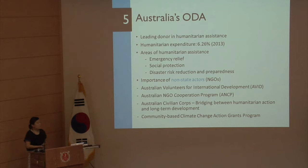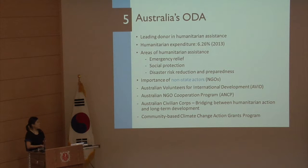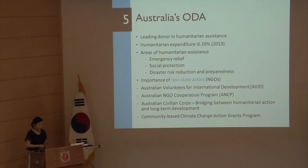Another key characteristic of Australia's ODA is that it is a leading donor in humanitarian assistance. The expenditure for humanitarian assistance that Australia commits is three times more than what Korea spends. The areas of humanitarian assistance for Australia are also diverse, including disaster risk reduction and preparedness — not just emergency relief.